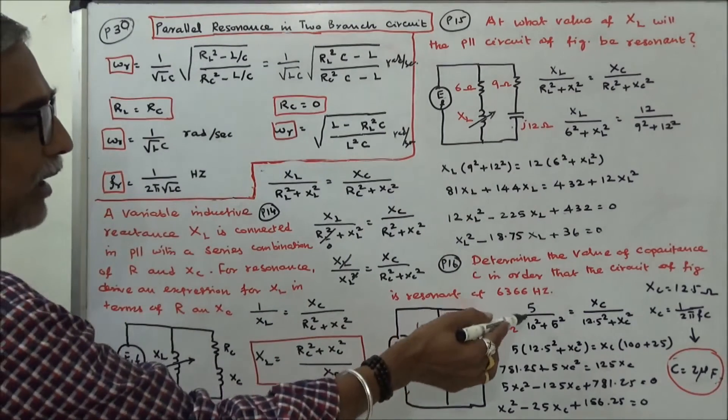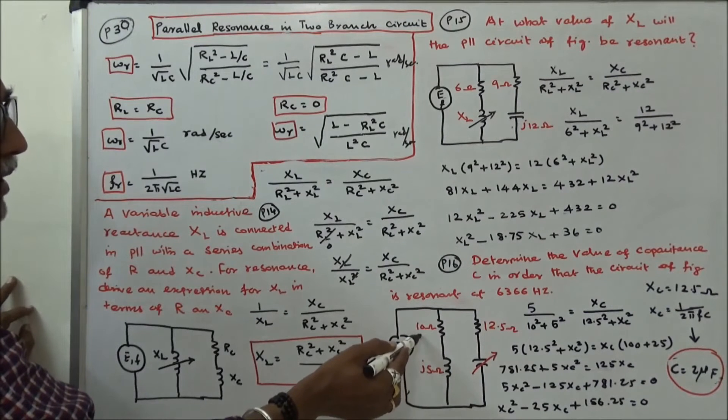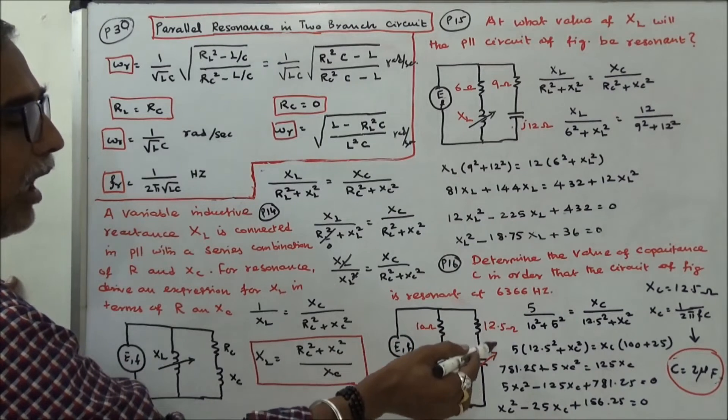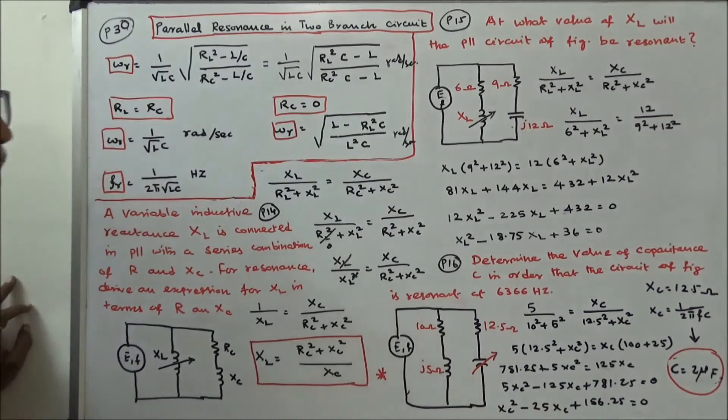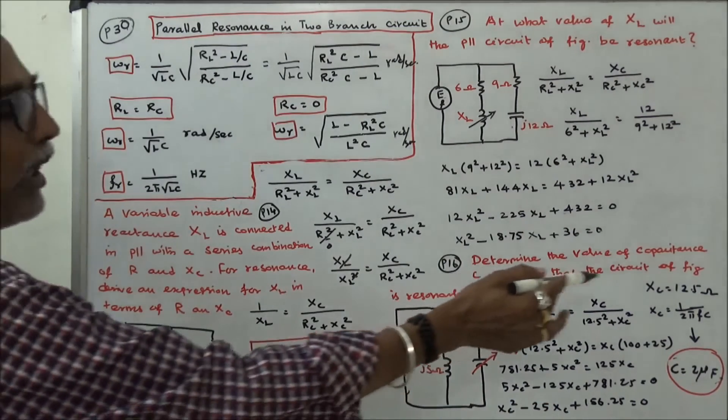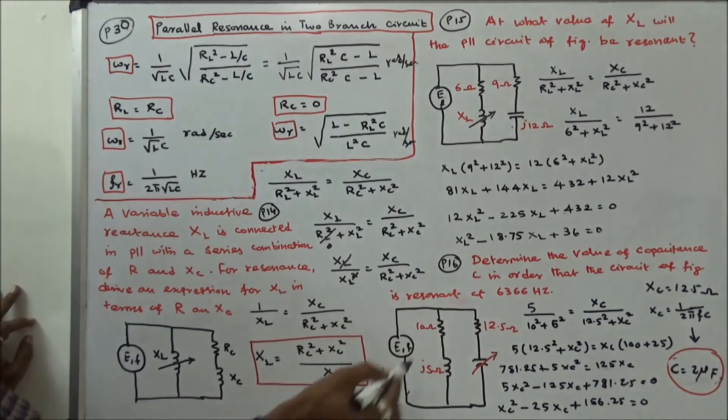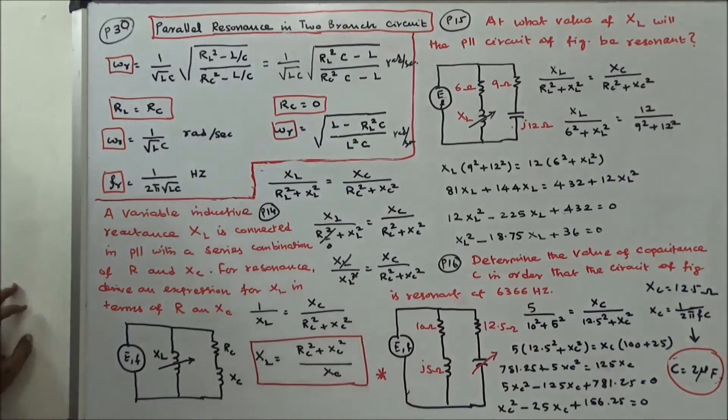Again, Xl value is given 5, Rl value is given 10, Xc value is not given, Rc value is given. Again, you've got a quadratic equation. Solve the quadratic equation. You've got Xe is equal to 12.5 ohms. Xe is equal to 1 by 2 pi Fc. Resonance frequency is given 6366, C value is 2 microfarads.